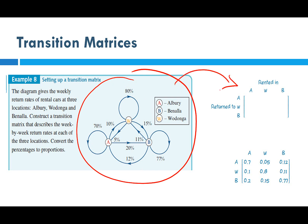From the diagram we set up the matrix with Albury, Wodonga, Benalla as columns (rented in) and rows (returned to), abbreviated A, W, B. Rented in Albury, returning to Albury: 70%. Rented in Wodonga, returning to Albury: 5%, so 5% goes in that cell. Rented in Benalla, returning to Albury — follow the arrowhead going to A — that's 12%.